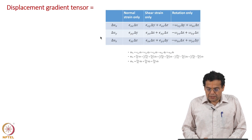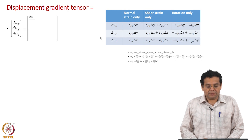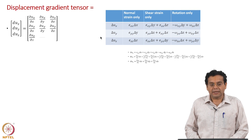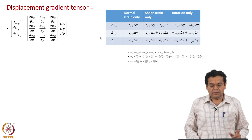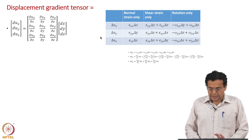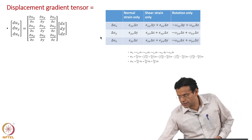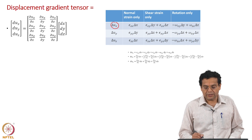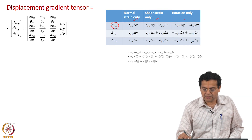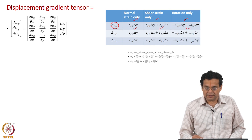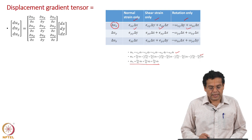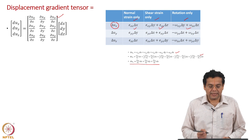Let us write down the displacement gradient tensor using the first way — the mathematical way — where we expressed the total differential in terms of partial differentials. Second, we analyzed the individual contributions to the displacement in the x-direction: difference in displacement due to normal strain, shear strain, and rotation. We summed up all components in the previous slide and proved that it is the same as the first row for the x displacement component, thus getting an expression for the displacement gradient in the second way also.